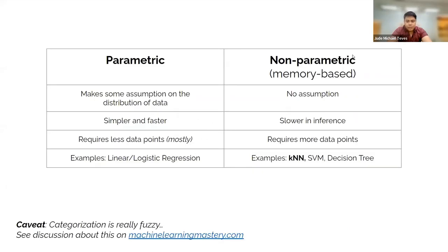KNN is a non-parametric model. So what's the difference between parametric and non-parametric models in the context of machine learning?